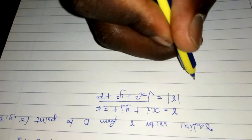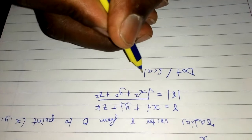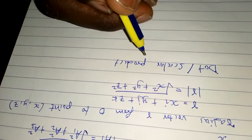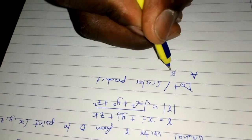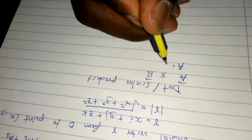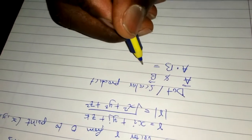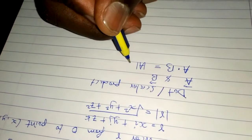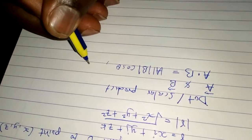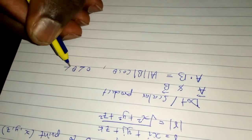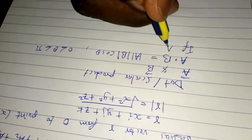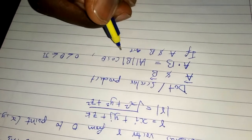Now let's discuss what is called the dot or scalar product. If you have two vectors, vector a and vector b, then the dot product a·b is equal to the magnitude of a times the magnitude of b times the cosine of the angle between them, and this angle ranges from 0 to π.